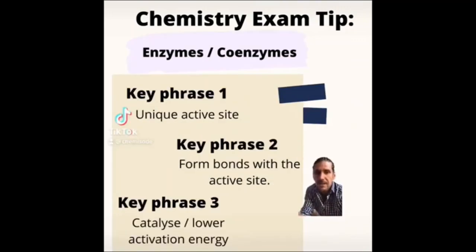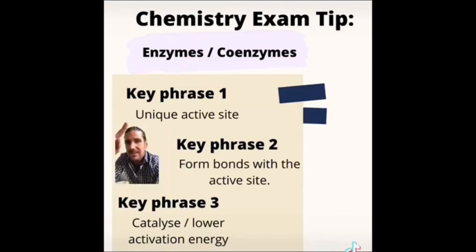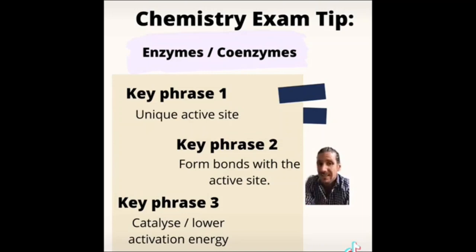Chemistry exam tip number 11 and this is about key phrases to use when talking about enzymes or coenzymes. Number one is here. Fundamental to enzyme function is their unique active site. That means that this active site is unique and only catalyzes a very, very, very specific type of molecule. Second key phrase to talk about is the fact that that molecule, called the substrate, it forms bonds with the active site. So the important thing about this is the enzyme can't work unless the substrate forms a bond with the active site.